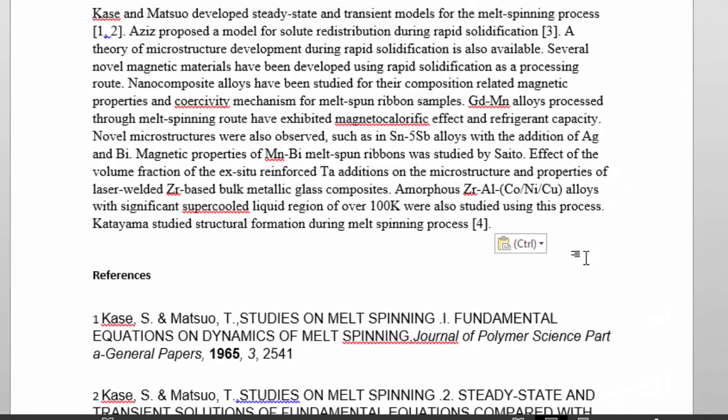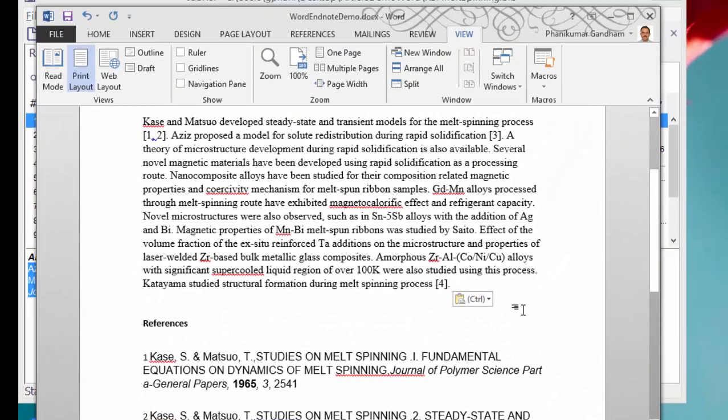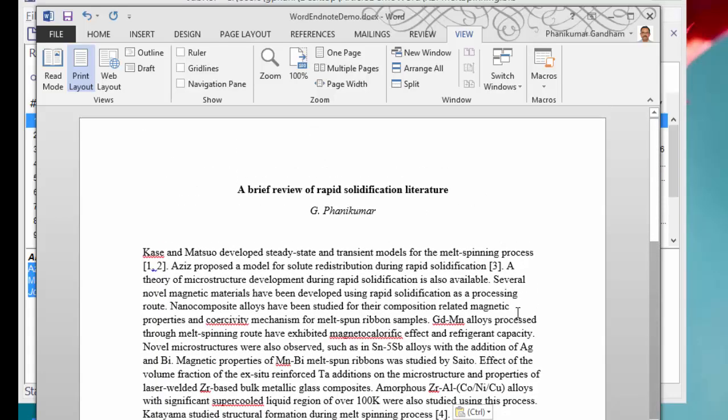Adding references in a Word document so that the sequencing is taken care of is as simple as that. However, using EndNote would mean that you would be adding the bibliographic references manually by typing it out or copy-pasting from some other source. It is as simple as that.